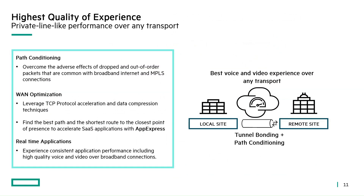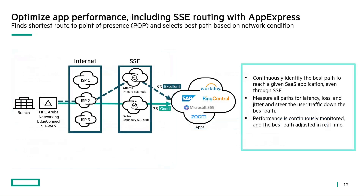Another benefit of the EdgeConnect solution is AppExpress. AppExpress takes the multiple internet connections, measures connectivity to the SSE or cloud data centers for cloud resources, and gives you a performance score for those connections. It measures all paths — latency, loss, and jitter — and steers traffic down the best path possible to maintain the best connectivity to cloud resources.